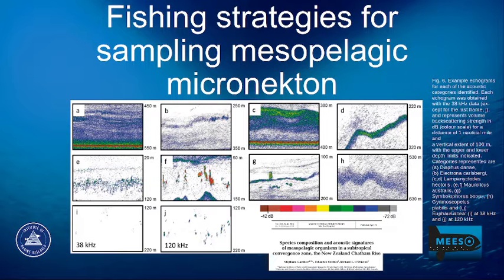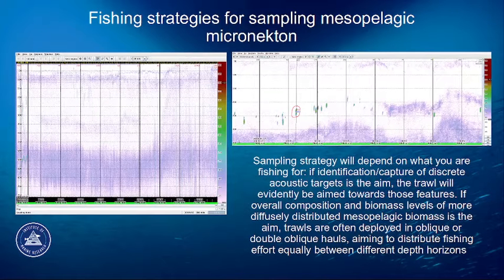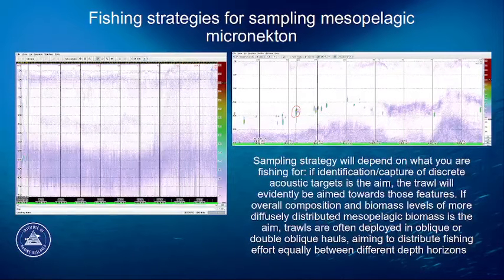If the aim is to capture or identify distinct features on the echograms, the fishing strategy is pretty straightforward — you have to aim your device at these features while capturing as little as possible anywhere else. Here are a couple more examples of echograms showing different spatial distributions of organisms. In the left echogram there are no areas of strong echoes but a weak diffuse scattering layer can be seen at depth from approximately 450 meters downwards. In the right echogram there is a mixture of components, with a distinct aggregation seen at intermediate depths especially at the start of the echogram, whereas diffuse layers are found at depth and in later parts of the echogram.